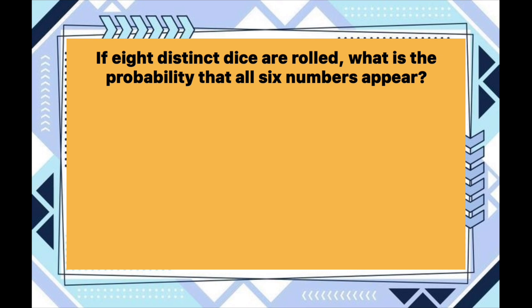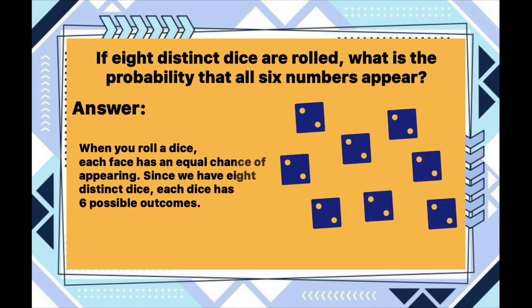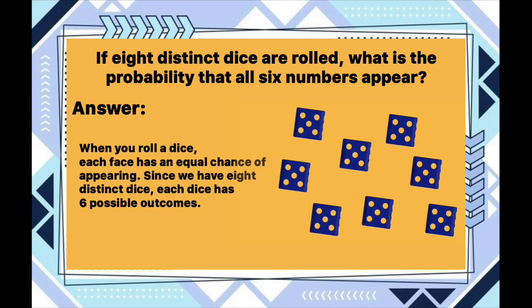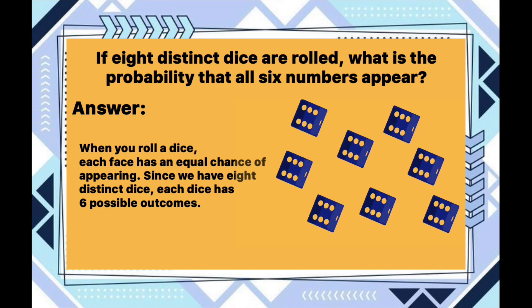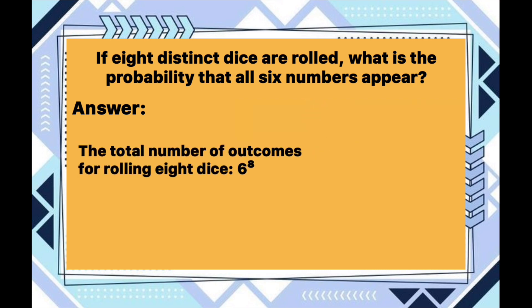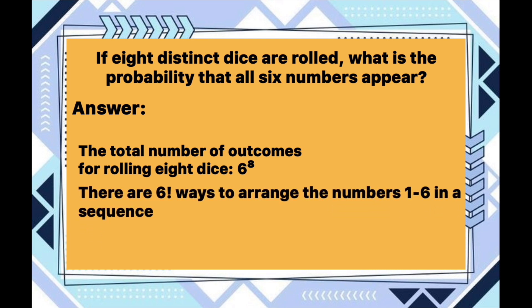If eight distinct dice are rolled, what is the probability that all six numbers appear? When you roll a die, each face has an equal chance of appearing. Since we have eight distinct dice, each die has six possible outcomes. The total number of outcomes for rolling eight dice is 6 to the power of 8, since each die has six possible outcomes and the rolls are independent. Now let's consider the number of ways in which all six numbers can appear.